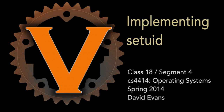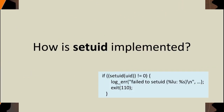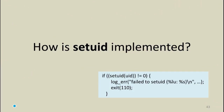How is setuid implemented? What do we think happens inside setuid? First of all, where is it implemented? That call to setuid inside Apache, inside HTTPD — where is that going?